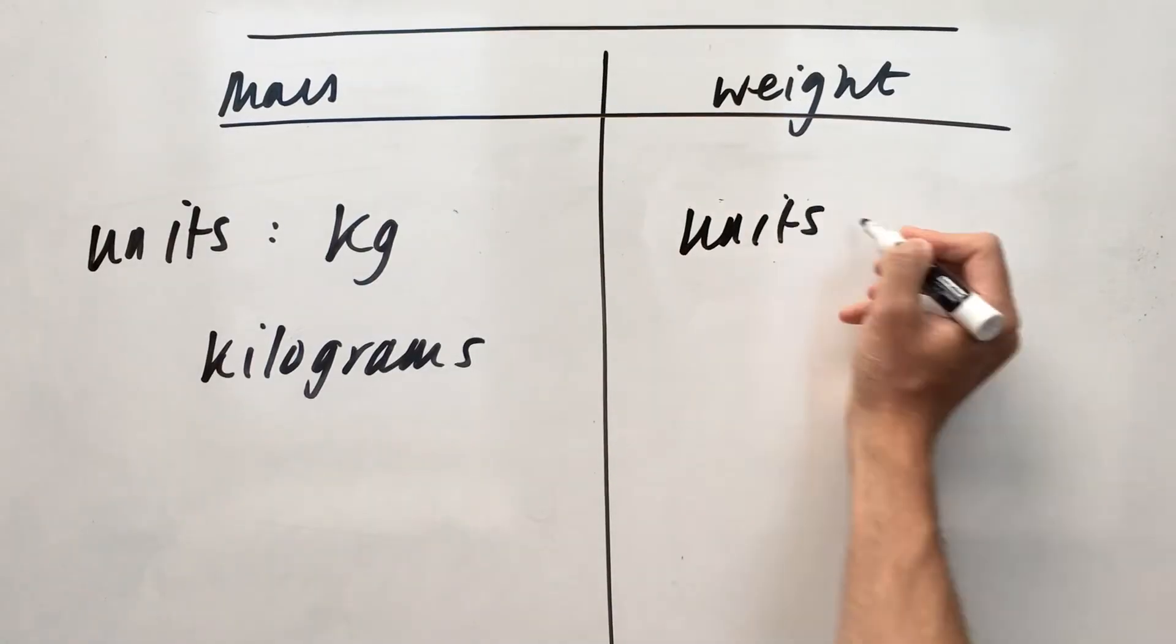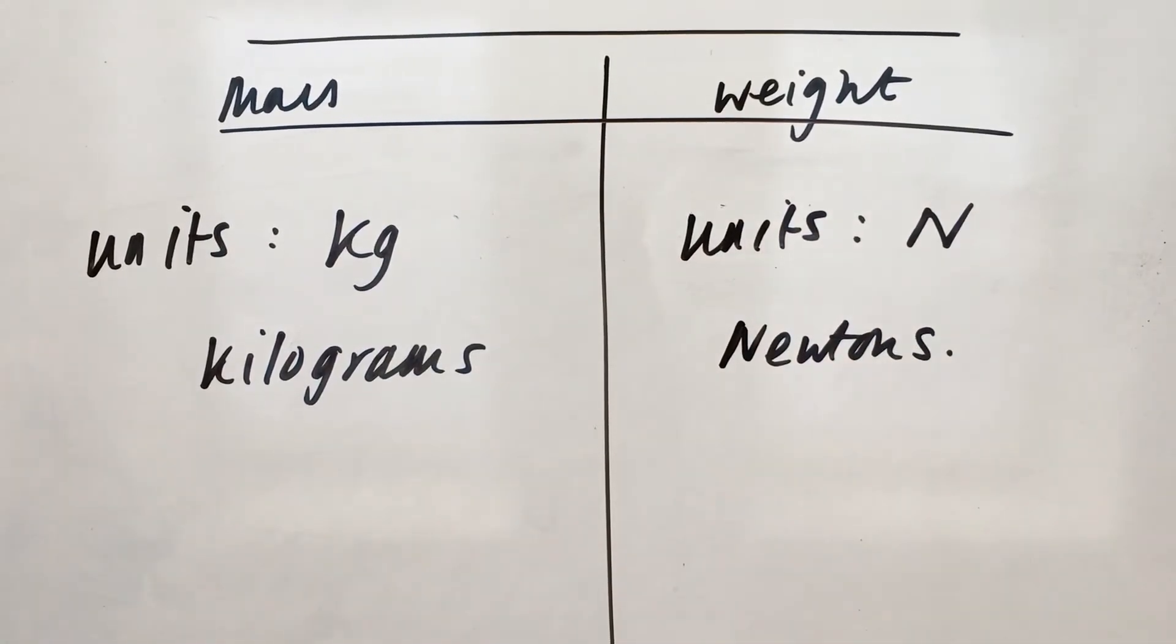Whereas, if you see a number on your question, and its units are newtons, you know that that is going to be the weight of the object, not the mass. So mass is in kilograms, weight is in newtons.